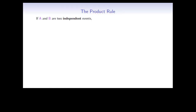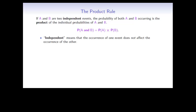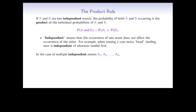Let's start by looking at the product rule. If A and B are two independent events, then the probability of both A and B occurring is the product of the individual probabilities for A and B. In other words, the probability of A and B is the probability of A multiplied by the probability of B. Independent events mean that the occurrence of one event does not affect the occurrence of the other. The product rule can also be used for multiple independent events, in which case you would just multiply the probability of each of the independent events to get the total probability.